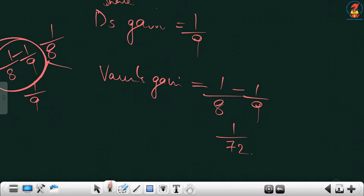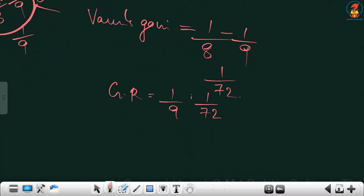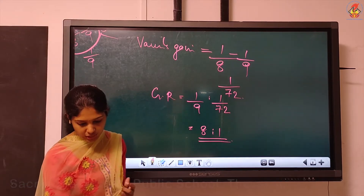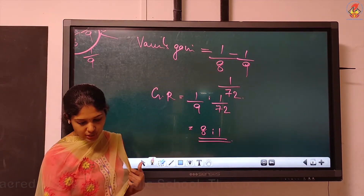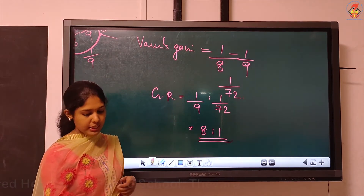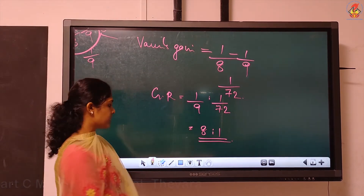The gaining ratio between Divya and Varun: Divya's gain is 1/9 which equals 8/72, and Varun's gain is 1/72. The base is different, so convert to common base — it will be 8:1. The question is not over; we have to get the new ratio also.